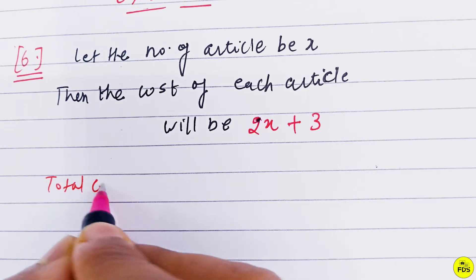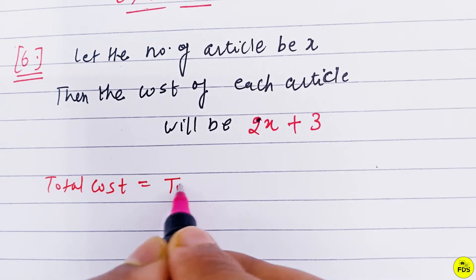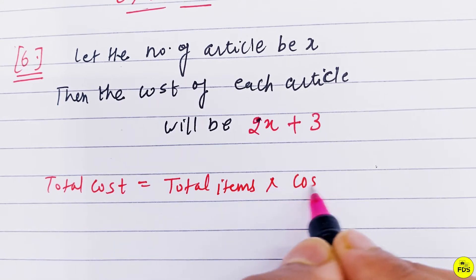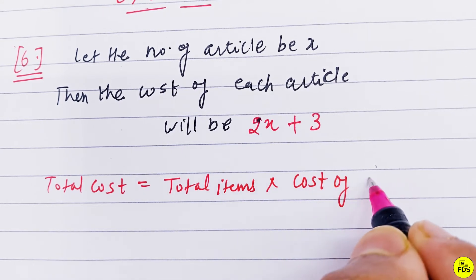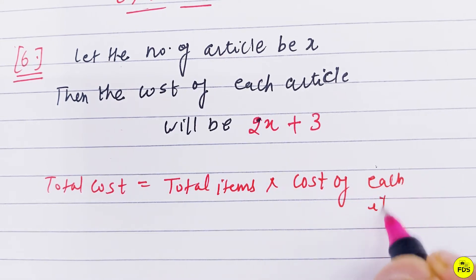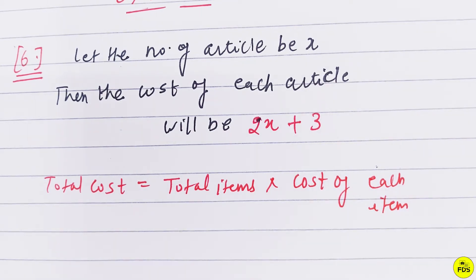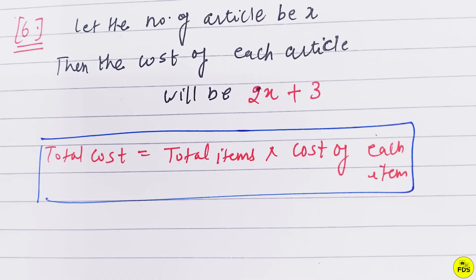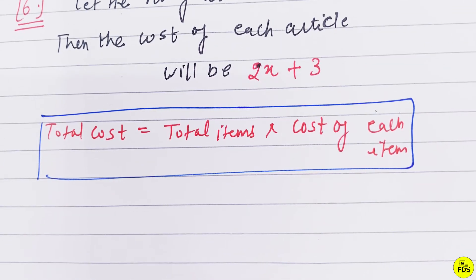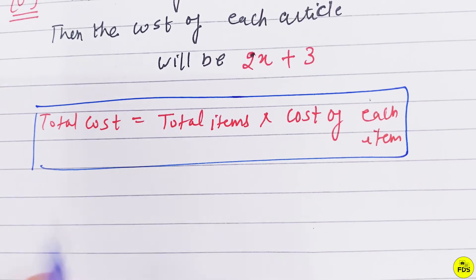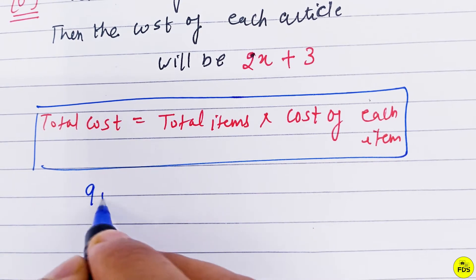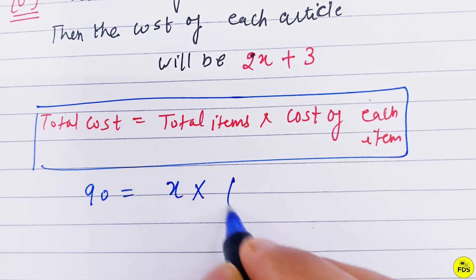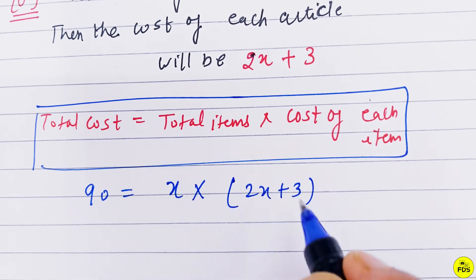Total cost is equal to total items multiplied by cost of each item. So, total cost is 90, total items is x, and cost of each item is 2x plus 3. Therefore, 90 = x(2x + 3).